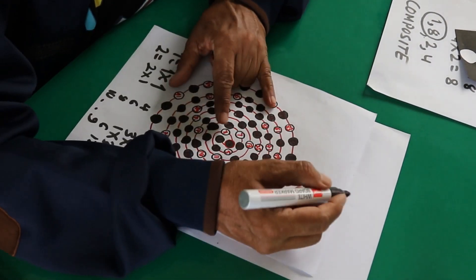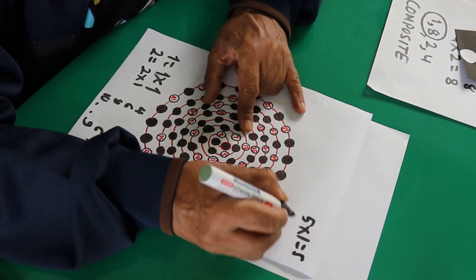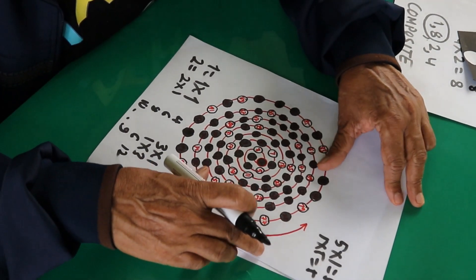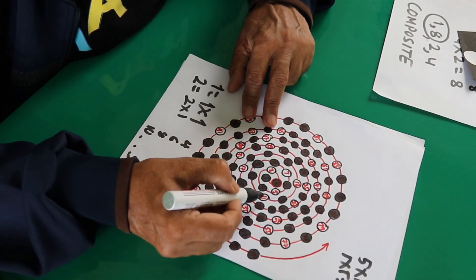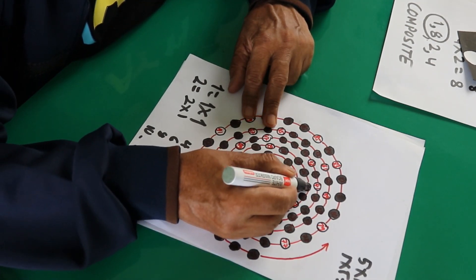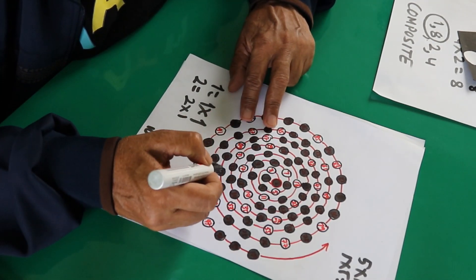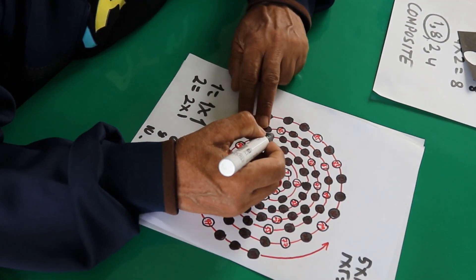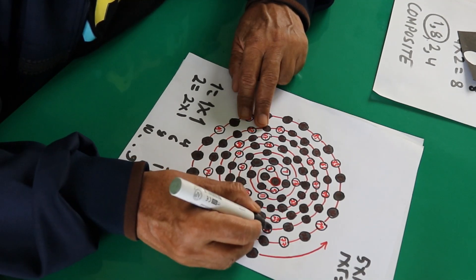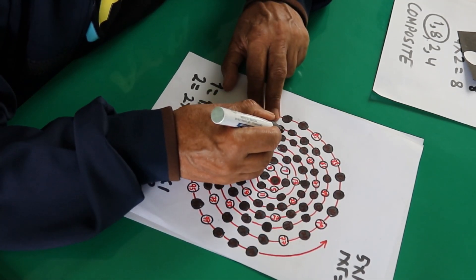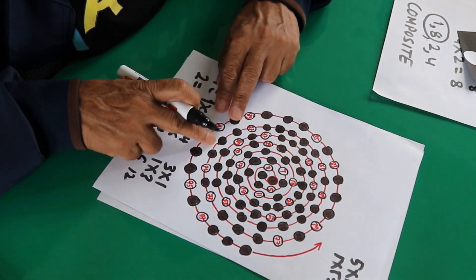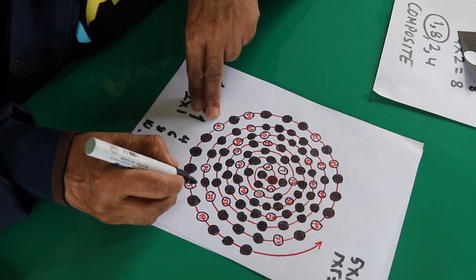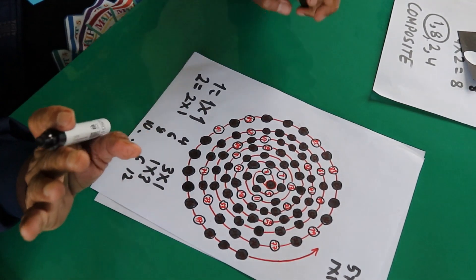And now, let's go and choose the number five. Five is a prime number. Five ones are five, one five is five. It has only two factors. And set all the multiples that are left here which are divisible by five. So in this circle, five fives are twenty-five is there, five sevens are thirty-five is there, five elevens are fifty-five is there, five thirteens are sixty-five is there, ninety-five is there. So we have set five also.